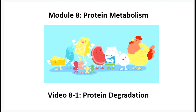This is module 8, protein metabolism. In this video, 8-1 protein degradation, I'll be describing some of the mechanisms by which your body digests proteins to turn them into amino acids. Your body doesn't use proteins in this form for oxidation and generation of ATP — it will use amino acids. The oxidation of amino acids for ATP production will be discussed in video 8-1.